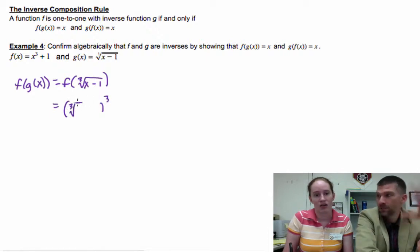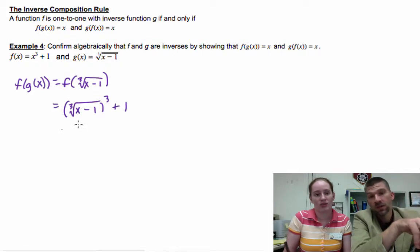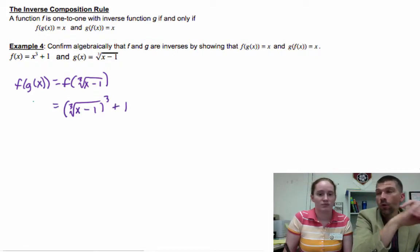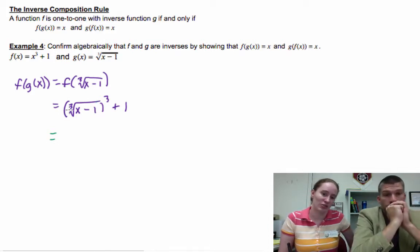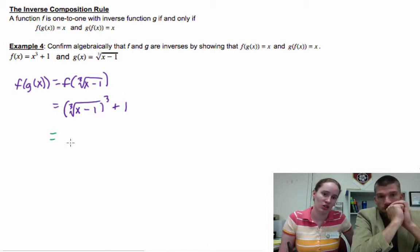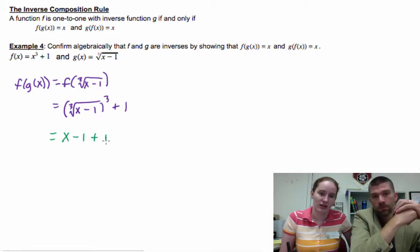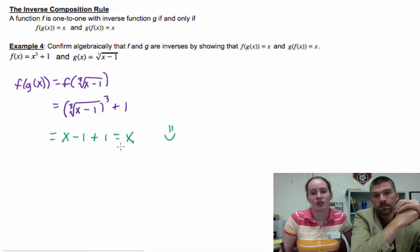And you have to do this going both ways. You can't do one way and get x and be like, oh, it's inverses. You have to actually do both function compositions because it's possible that one way will just give you x and one won't. Now, here's the way this is going to simplify. The cube root cubed gives you x minus one, and then minus one plus one.